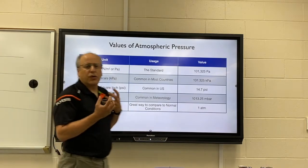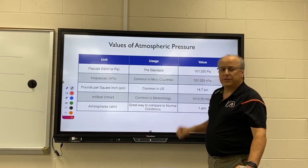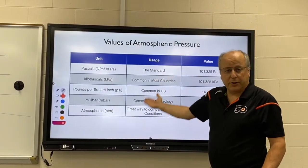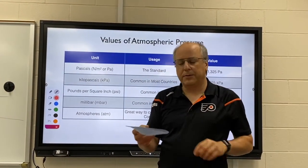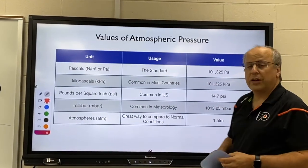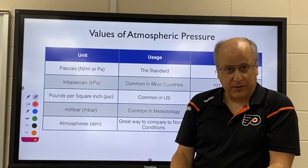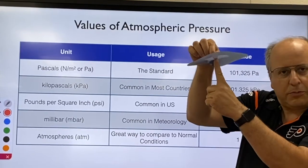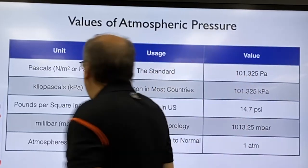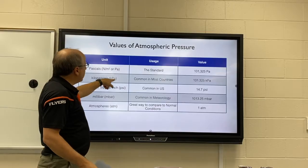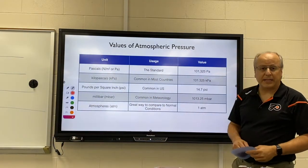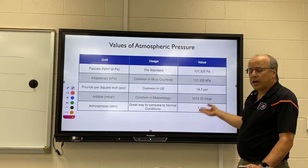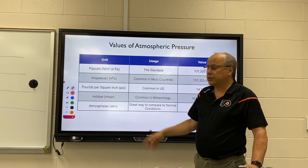The standard for atmospheric pressure is 101,325 Pascals — a tremendously large number. That means every square meter experiences a force of about 101,000 newtons pushing down on it from the weight of the air above. It's a tremendous amount of force. The reason we don't usually notice it is that the atmosphere is also pushing up and in all directions. Since 101,325 Pascals is such a large number, most countries use kilopascals — just move the decimal point three spots — giving you 101.325 kilopascals.